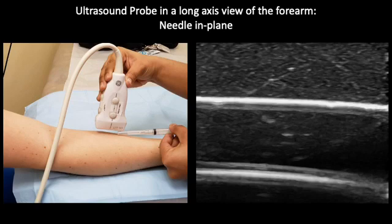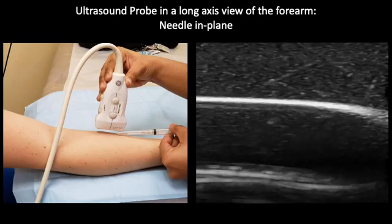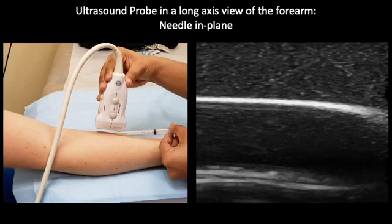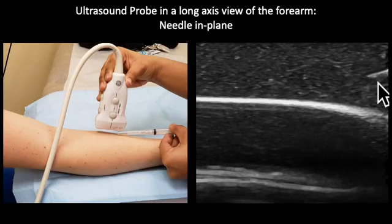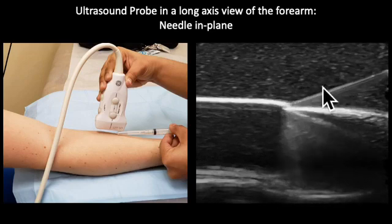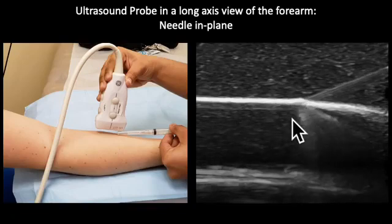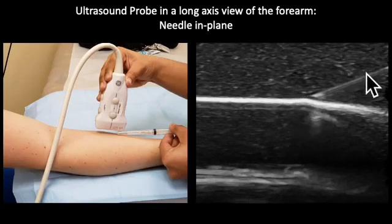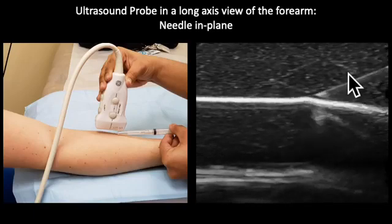In this picture on the left, the ultrasound probe is in the long axis view with the needle in-plane. In the video on the right we can see our simulated anatomical structure in the long axis view. We can start to see the needle come into view from the right side of the video. Again, notice how the entire shaft of the needle is visible on in-plane technique. Notice the needle going in and out of the vessel, taking careful note about how this appears on ultrasound.